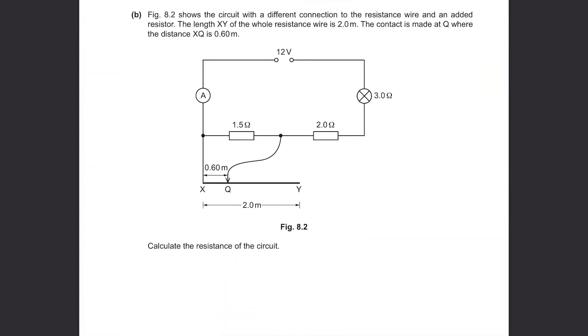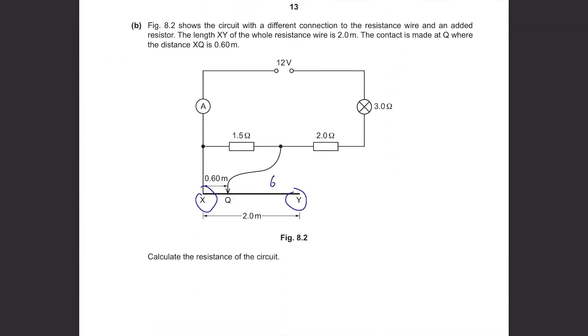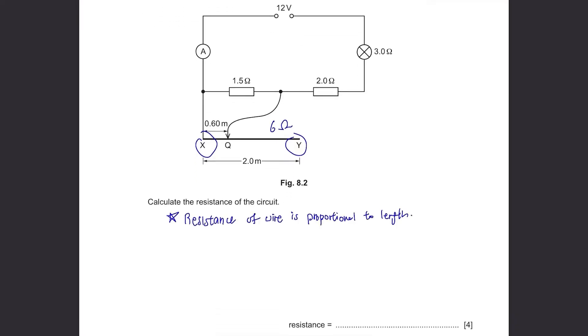Part B. Figure 8.2 shows the circuit with a different connection to the resistance wire and an added resistor. The length XY of the whole resistance wire is 2 meters. The contact is made at Q where the distance XQ is 0.60 meters. Calculate the resistance of the circuit. Although not stated here, the resistance of XY was 6 ohms. But this time we're only using 0.6 meters of the 2 meter wire. The important point is that resistance of wire is proportional to the length of wire. So to calculate the resistance of XQ, we can say 6 times 0.60 over 2, which is 1.8.